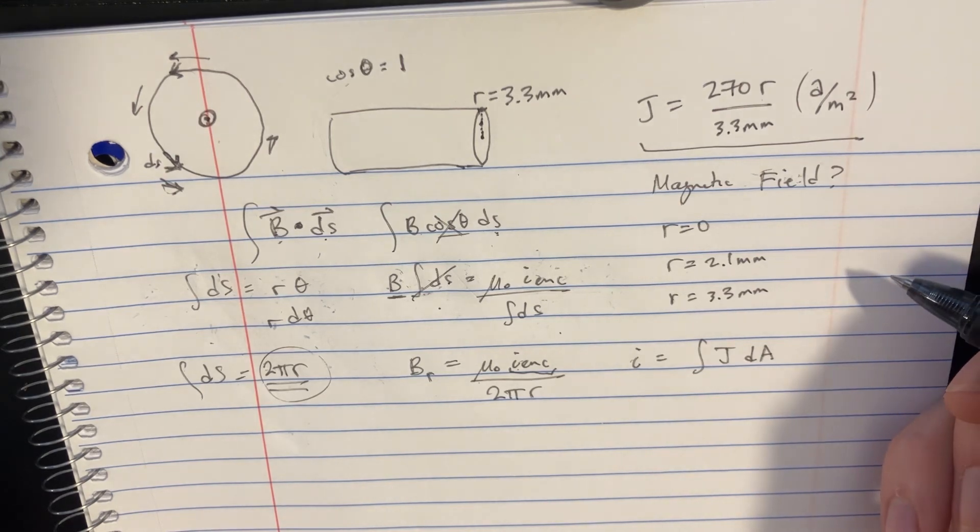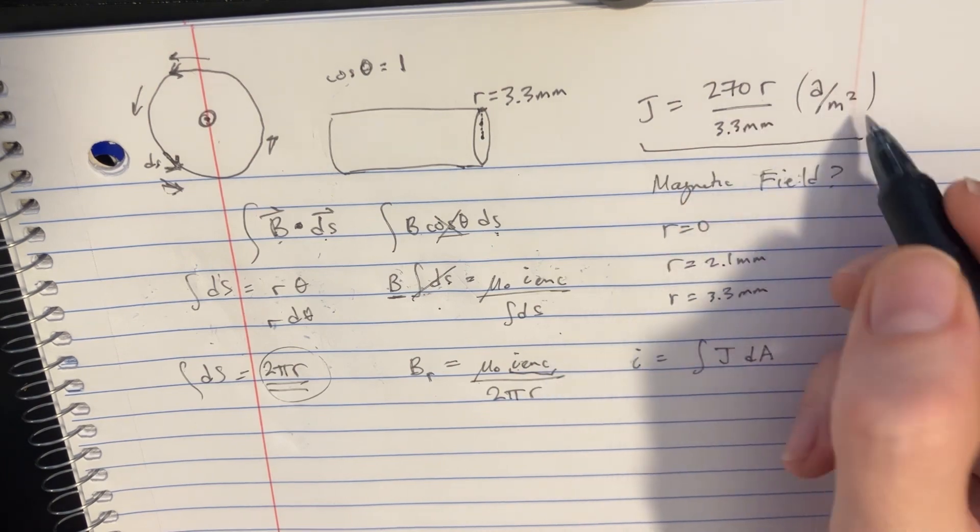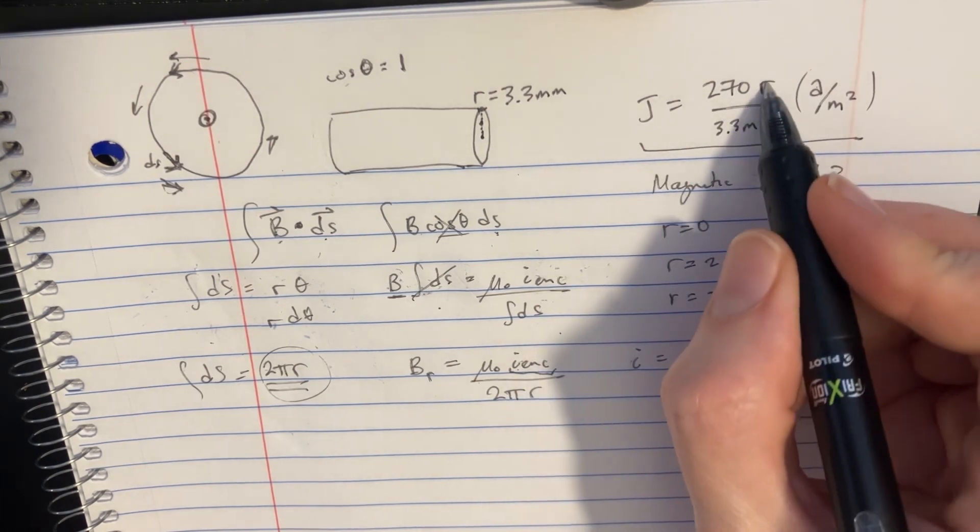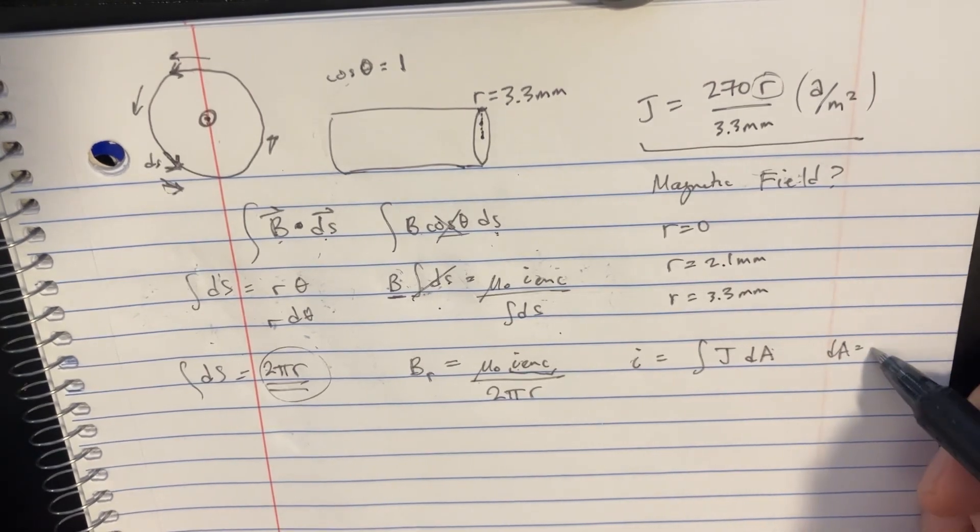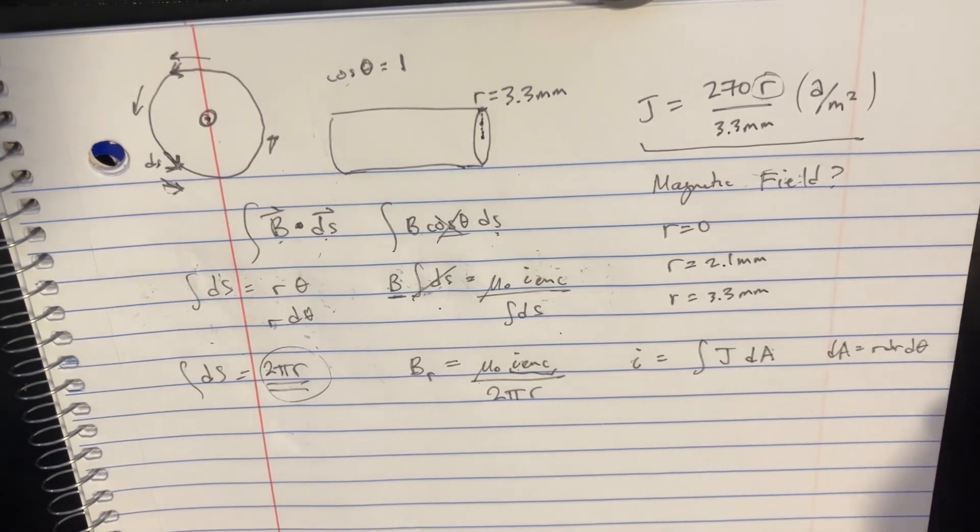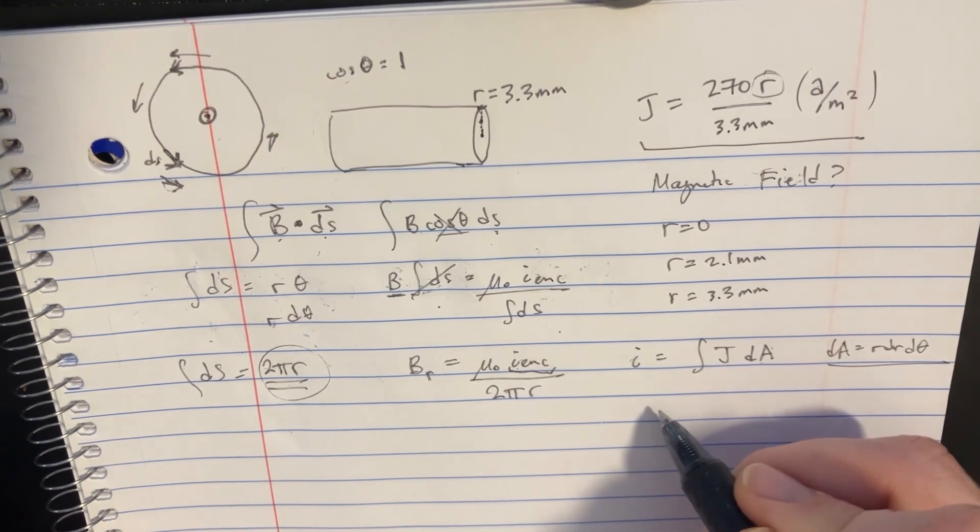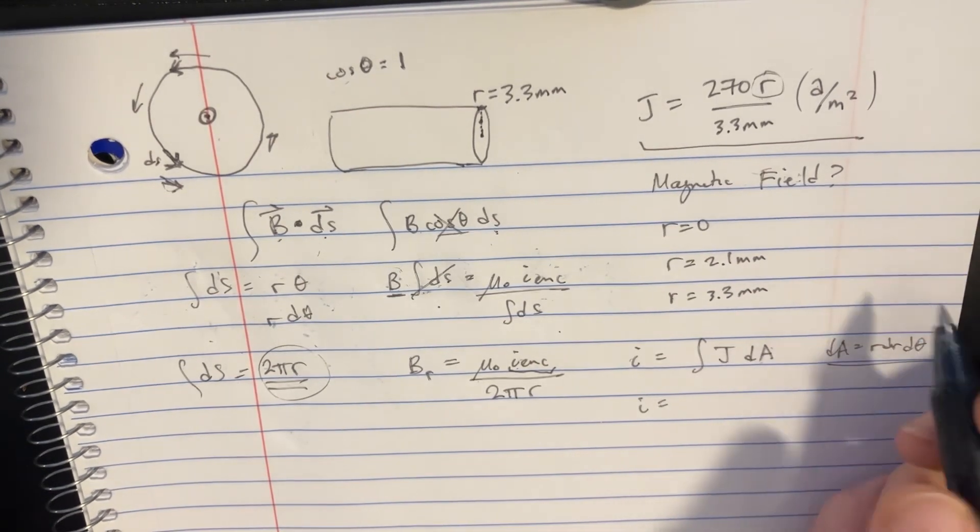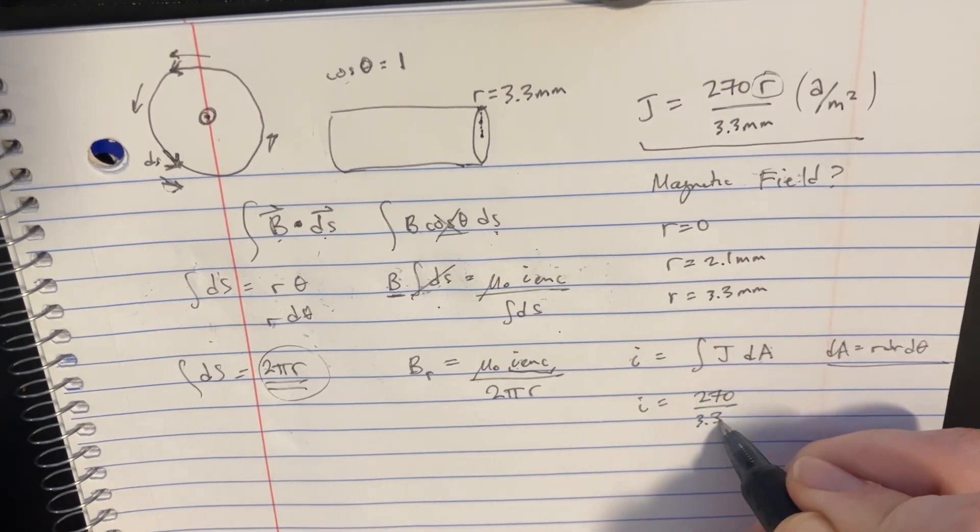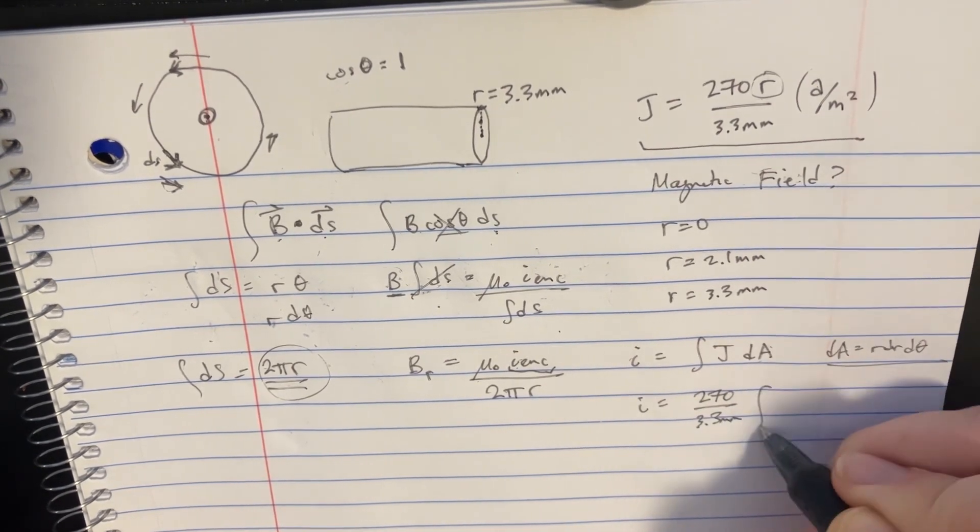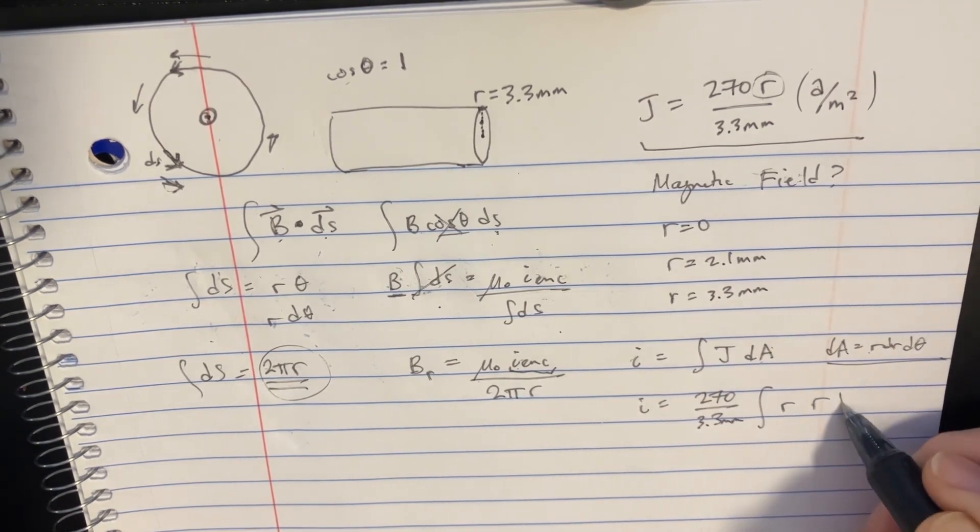And the j is going to be this situation right here. We have an r in there. And I know that dA is supposed to be r dr d theta. So we're going to use this over there. We're going to say i equals 270 divided by 3.3 millimeters. And there's the integral, there's an r in there. And then there's also an r dr d theta.